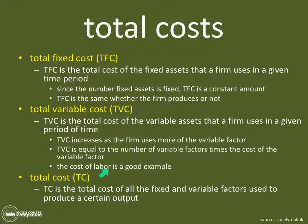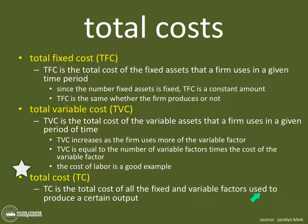Total Variable Cost, or TVC, is the total cost of the variable assets that a firm uses in a given period of time. TVC increases as the firm uses more of the variable factor. If the variable factor is labor, as more laborers are hired during ski season, variable costs go up. TVC equals the number of variable factors times the cost of the variable factor — for example, if labor costs $10 an hour, it's 10 times however many laborers you have. Then, Total Cost is simply TFC plus TVC added together — the total cost of all fixed and variable factors used to produce a certain amount of output.